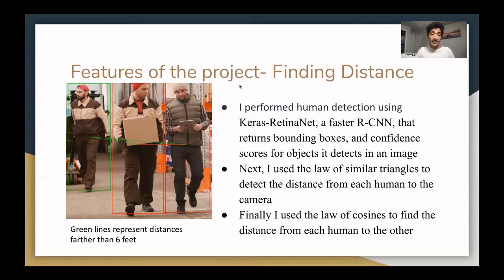As you can see in this image, red bounding boxes show that a person is ineffectively social distancing, meaning that they are within six feet of each other, while green boxes show that a person is safe. Green lines show that a person is farther than six feet away from another person, while red lines show that they are not.